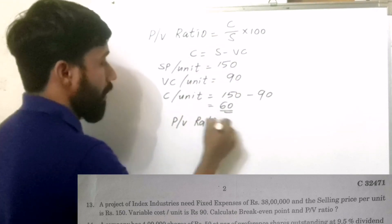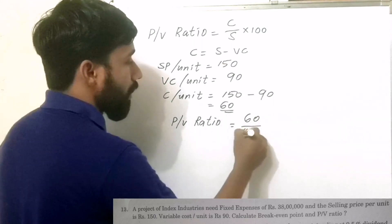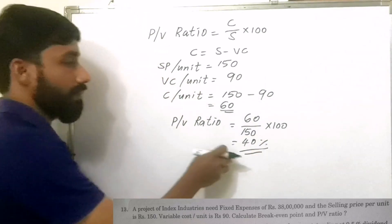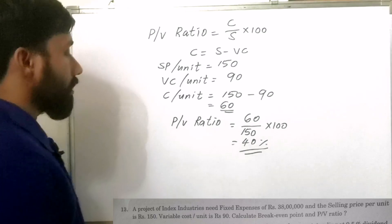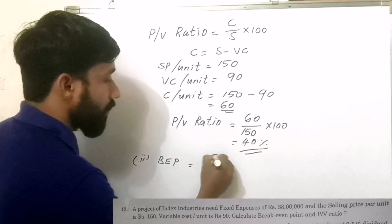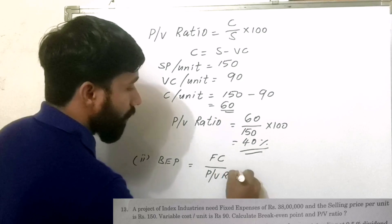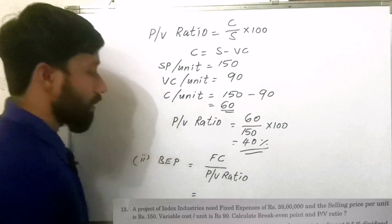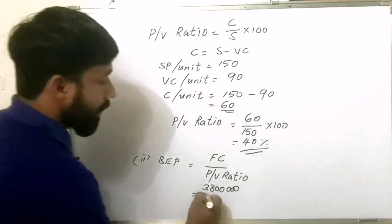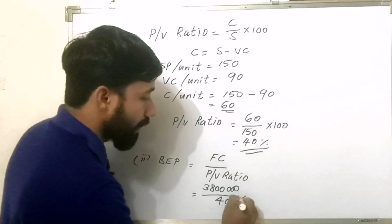PV Ratio is equal to Contribution divided by Sales. Contribution is Rs. 60, and the selling price per unit is Rs. 150. So we multiply by 100.